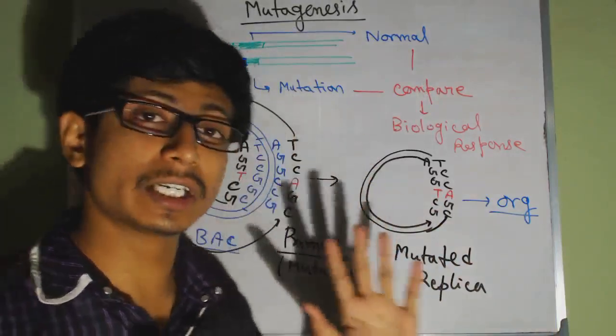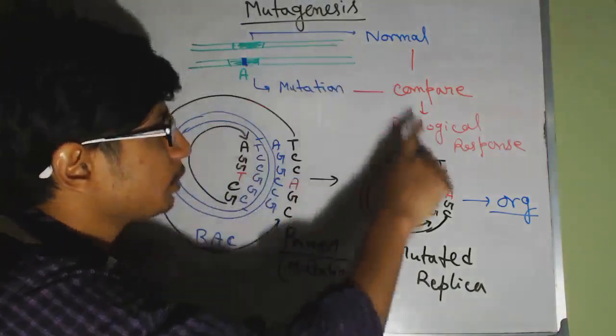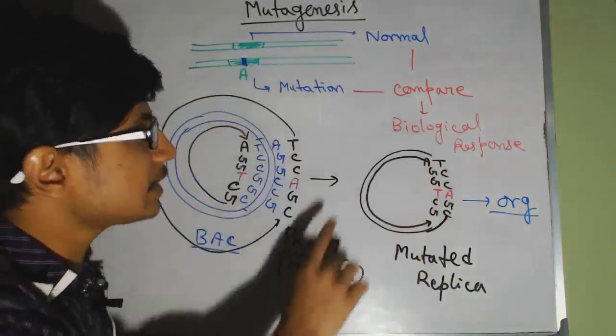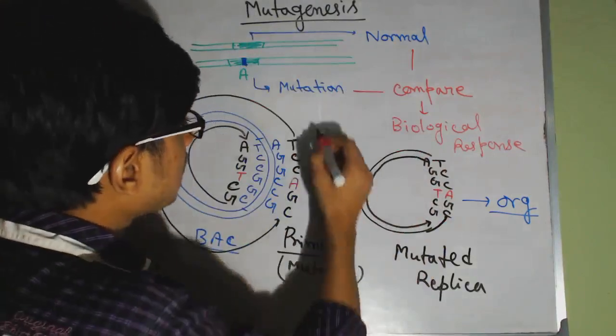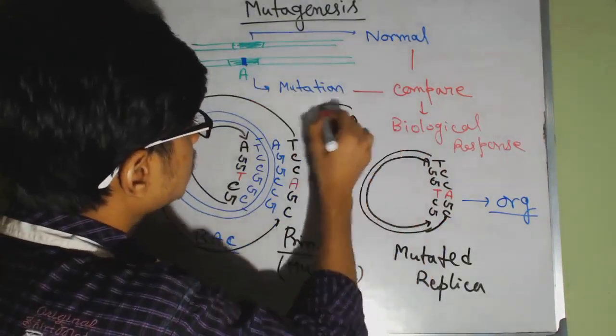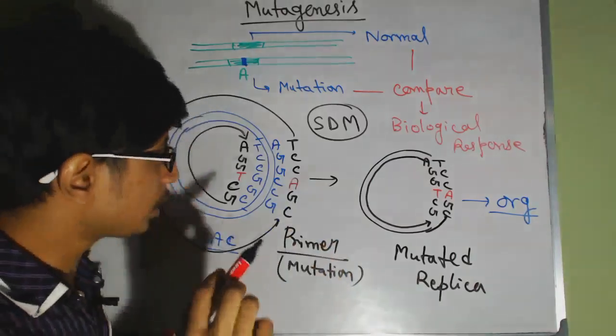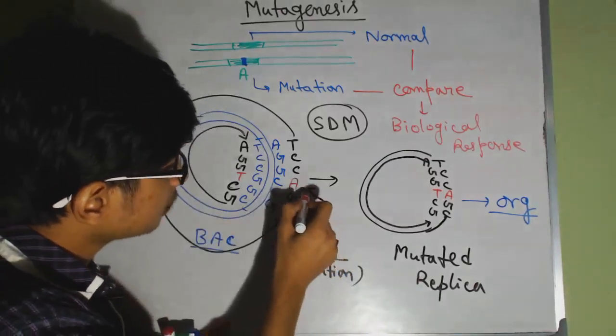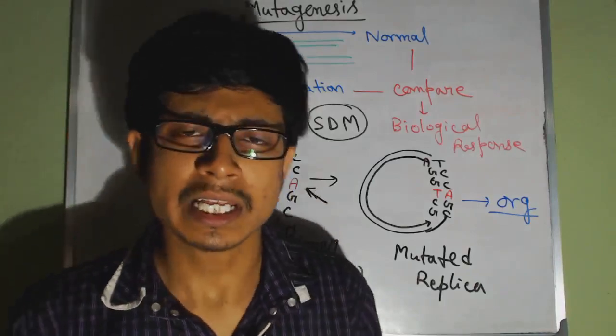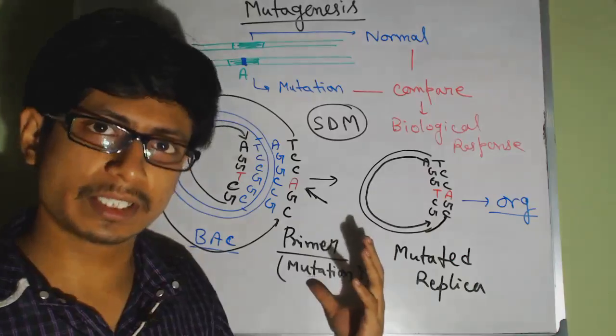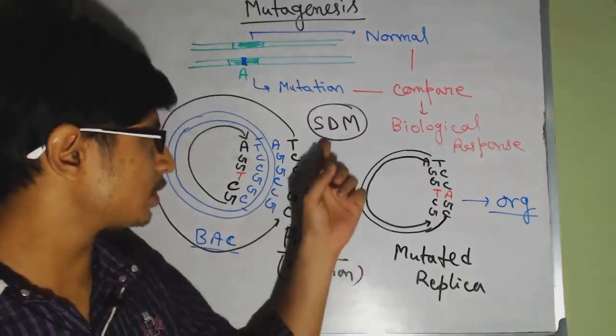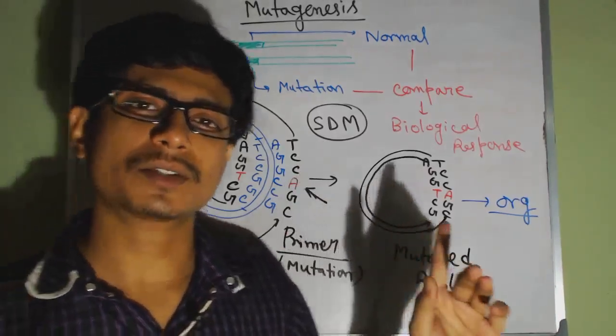This is how the mutagenesis works, and this whole process of mutagenesis that we talk about, this is known as site-directed mutagenesis, site-directed mutagenesis or SDM, because the mutation takes place in a specific site. Site-directed mutagenesis. There are different types of mutagenesis out there. This is a PCR-based mutagenesis, because we need to produce a primer thing here.